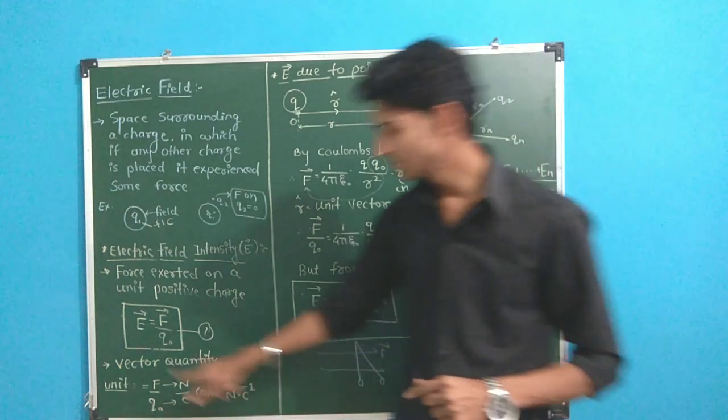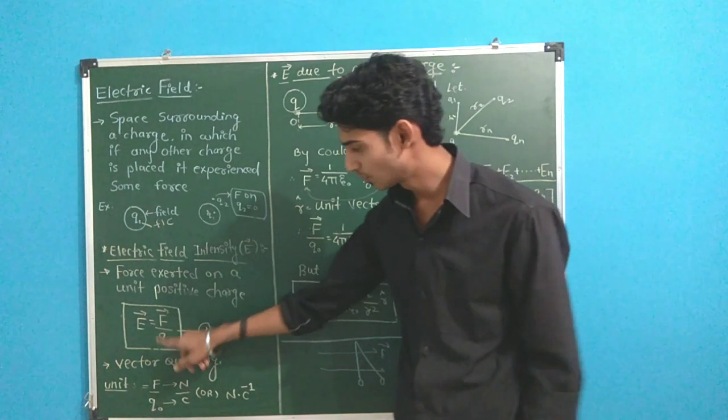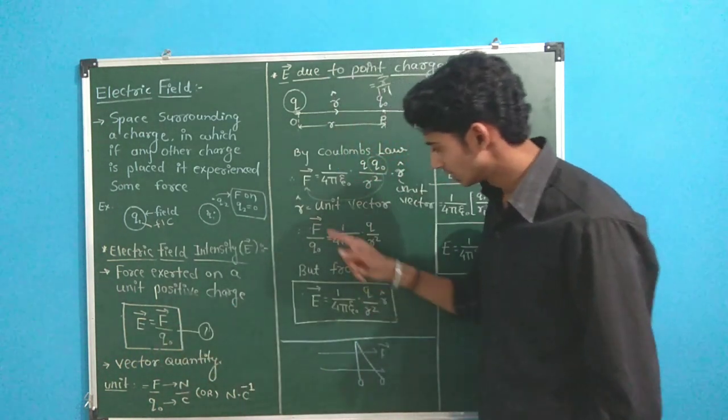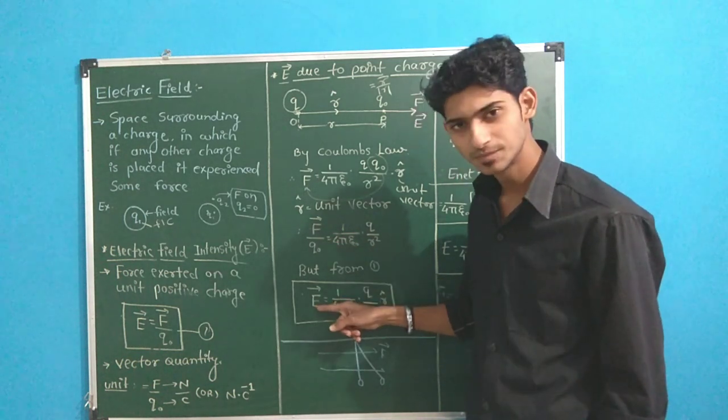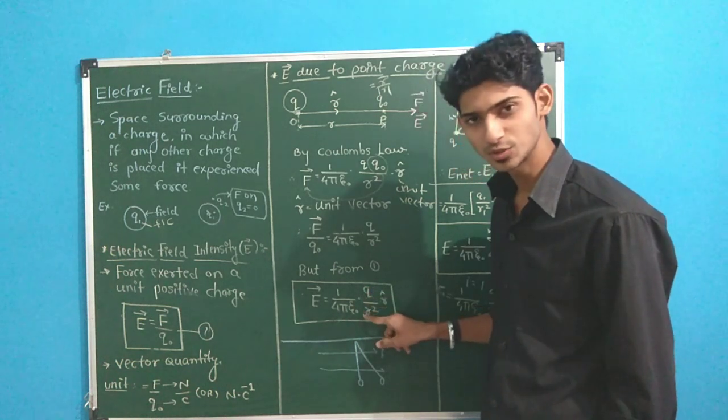Now, if we have considered equation number 1, force upon charge is nothing but the intensity. In simple terms, F upon Q is E. Therefore, we got E is equals to 1 upon 4π epsilon 0, Q upon R square.